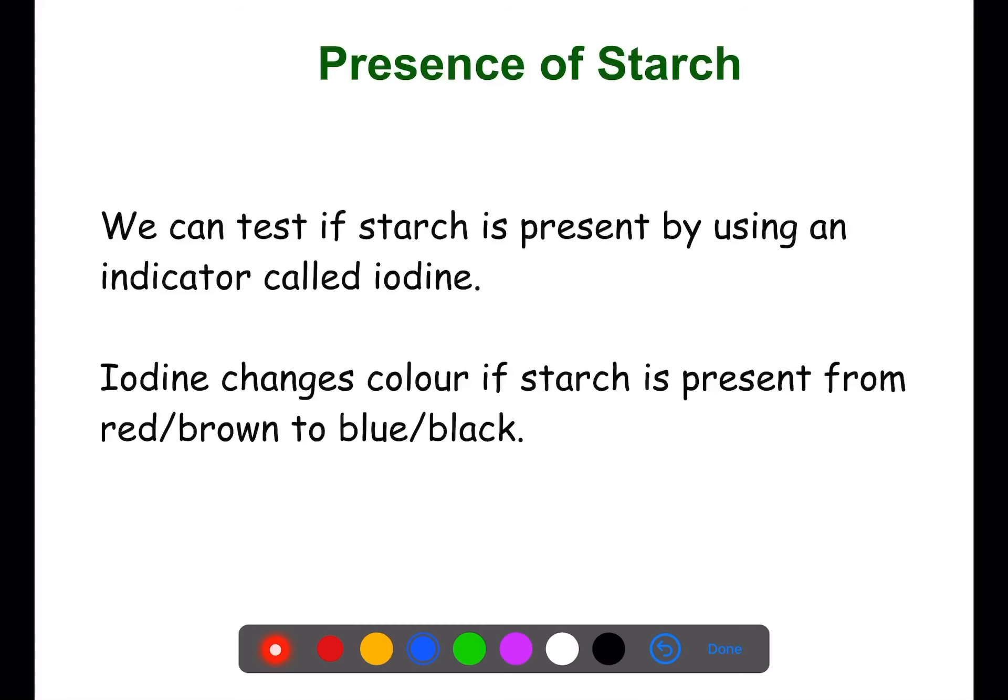We can test if starch is present in a plant — and therefore if photosynthesis has taken place — by using an indicator called iodine. When iodine is added to a plant which has undergone photosynthesis, it changes from a red-brown to a blue-black colour. We can see this in the following video clip.